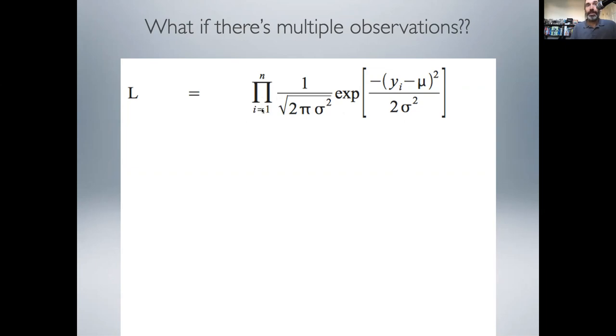So we end up ultimately with a product of each of these normal distributions. So this equation is exactly the same as what we looked at before, except for the subscript i, and we're now multiplying things together.